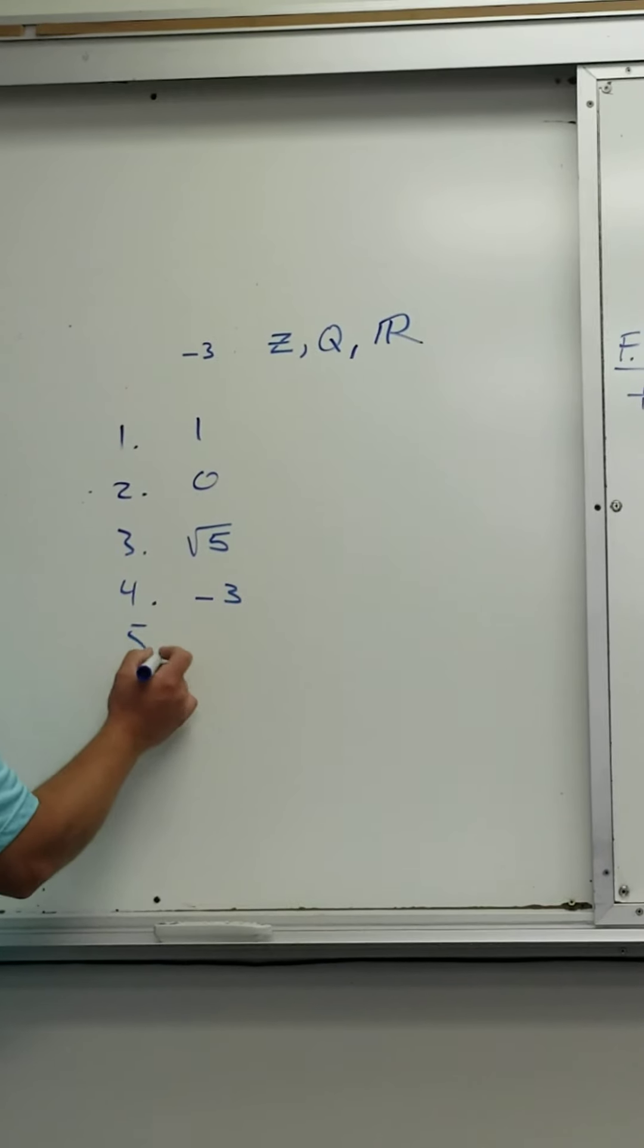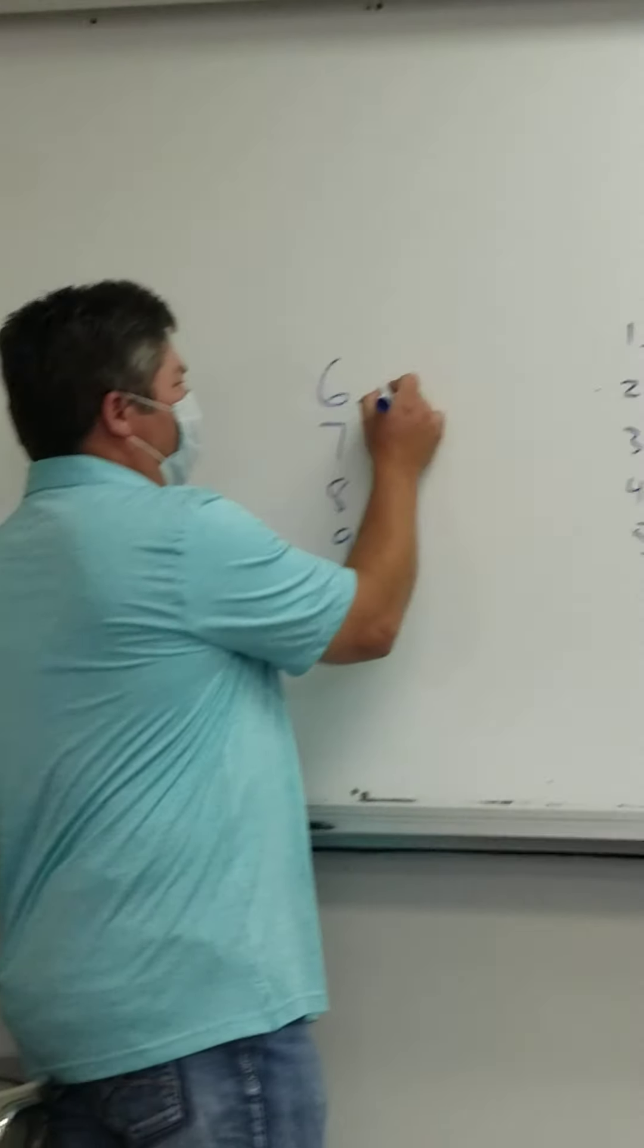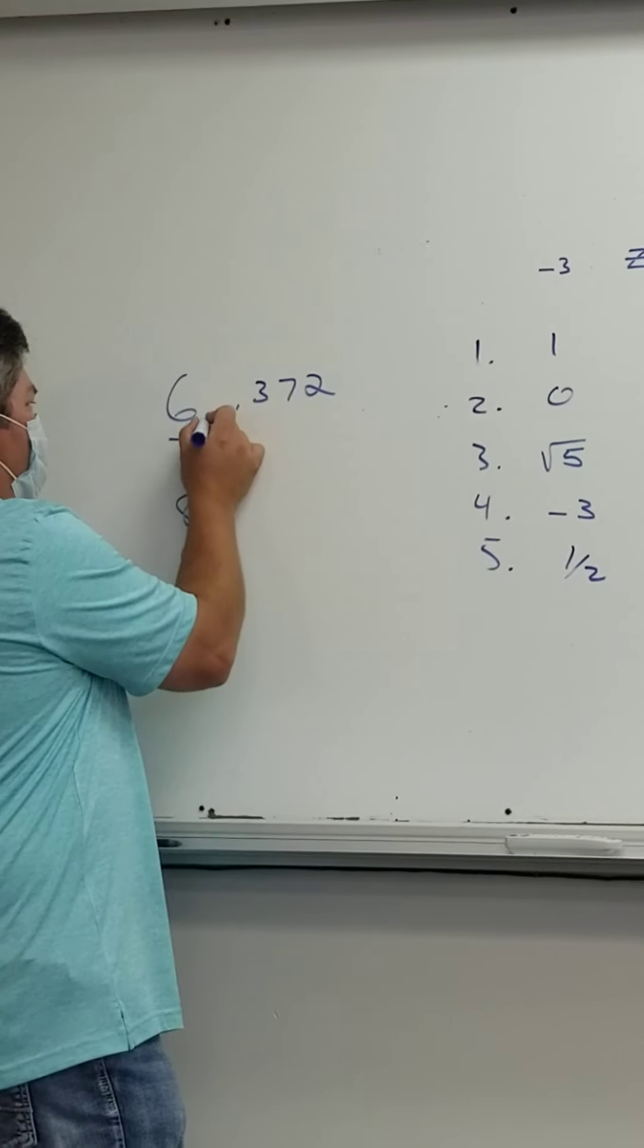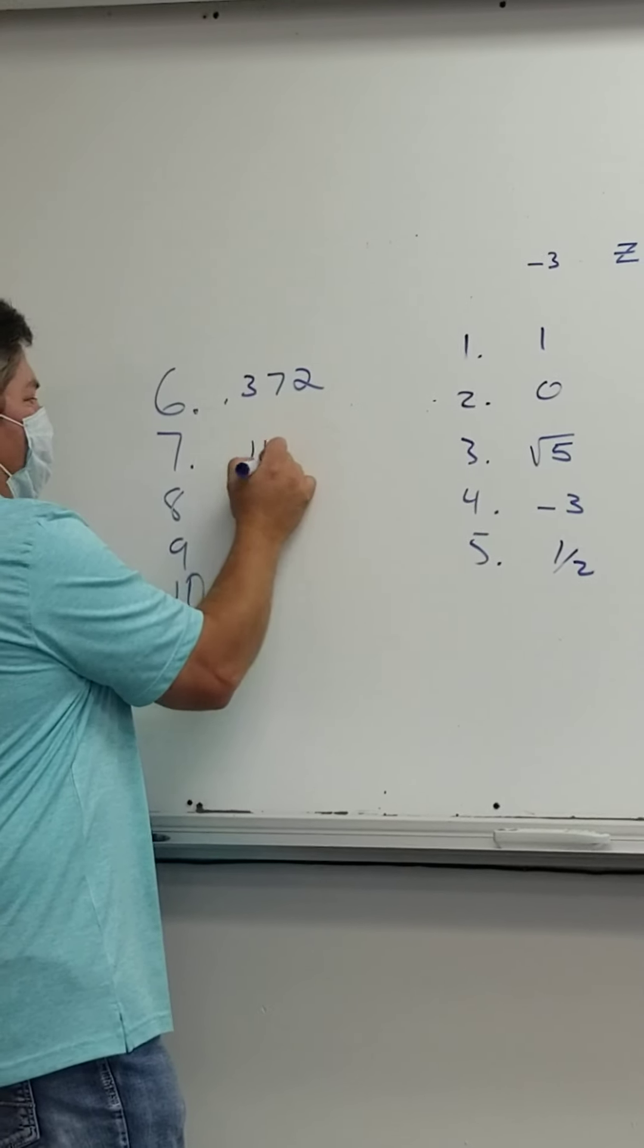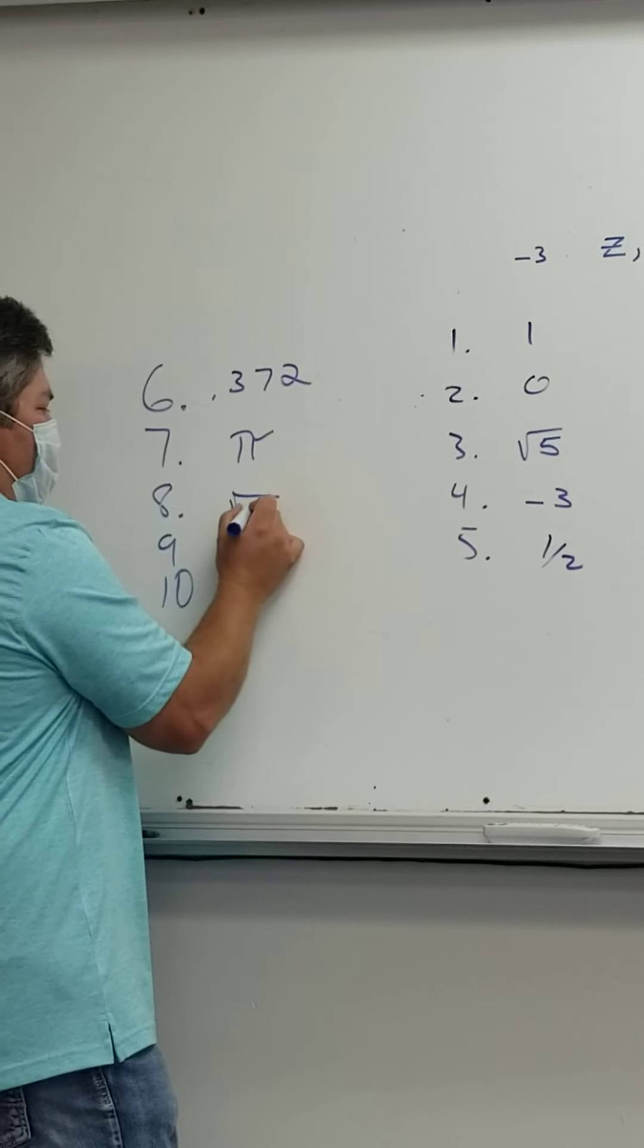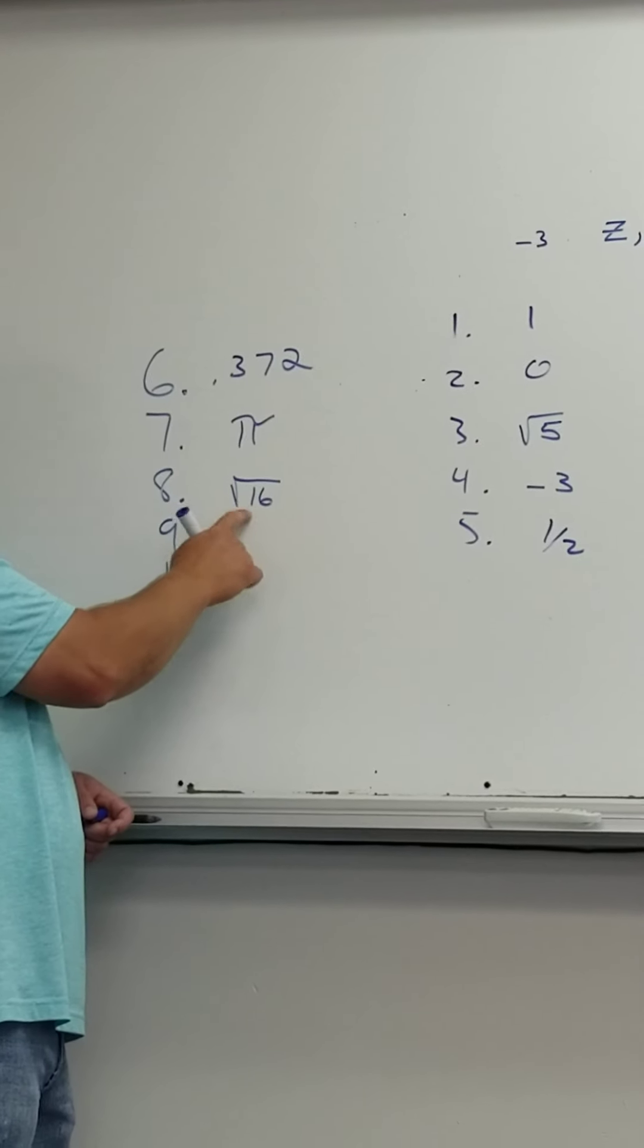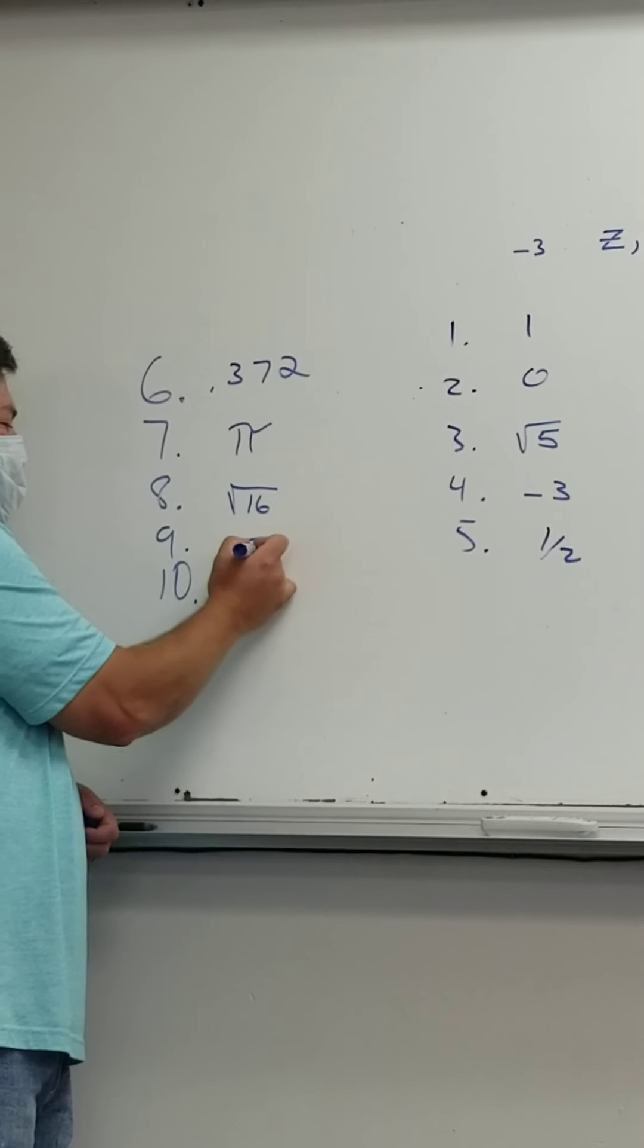Okay. So, negative 3 is the next one. And then we're going to go 1 half. And then we're going to go 0.372. And then we're going to go pi. And then we're going to go square root of 16. Tricky one! Giving you a hint. That one's tricky. Number nine. Square root of 15.